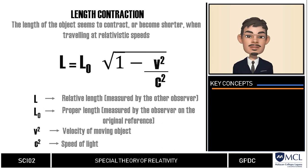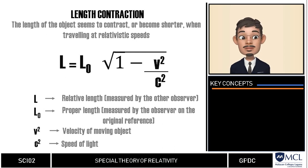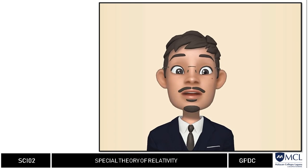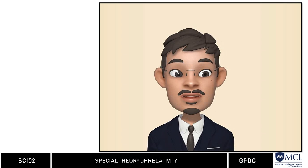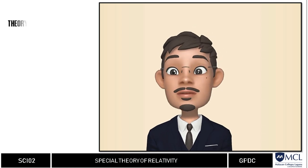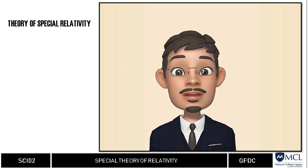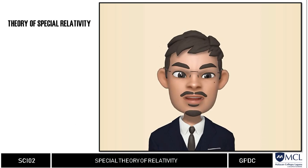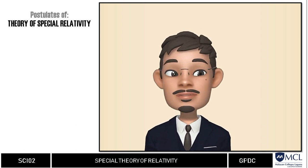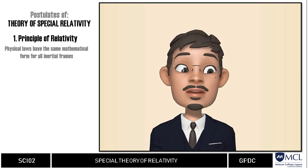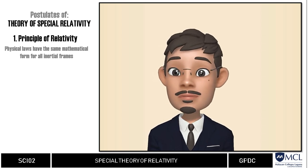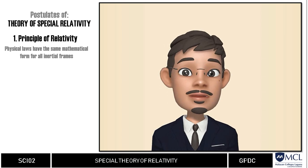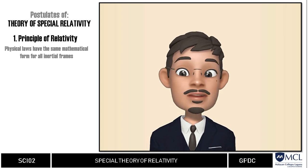Take note of this formula along with the previous time dilation formula, because in the next video we will have some worked examples. So far, we have discussed how Einstein explained motions in different inertial frames using his theory of special relativity. This theory has two postulates: first, the principle of relativity, which states that physical laws have the same mathematical form for all frames of reference moving at a constant velocity with respect to each other.